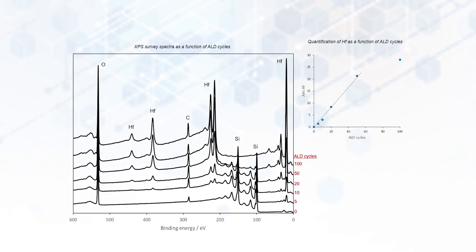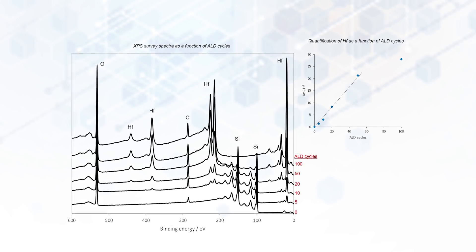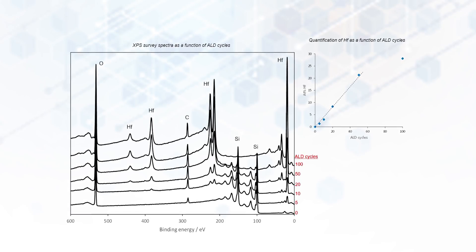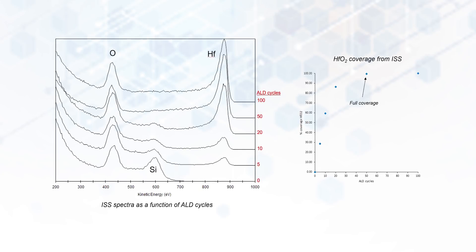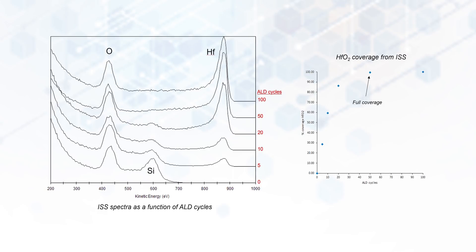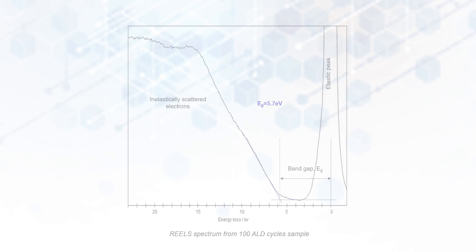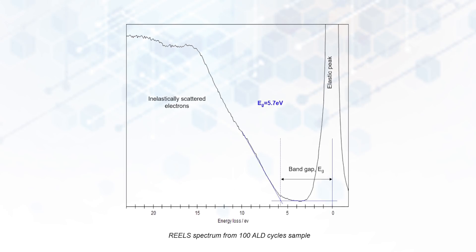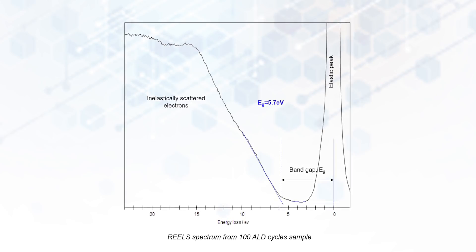If you're depositing something like a hafnium oxide with atomic layer deposition, and you're building up the layers cycle by cycle, using XPS you can measure how much material is deposited and how thick the films are. With ion scattering spectroscopy, ISS, you can measure whether you have a complete film or if you have partial coverage of the high-k material. And using Reels, you can measure the bandgap of the film as it grows in thickness.